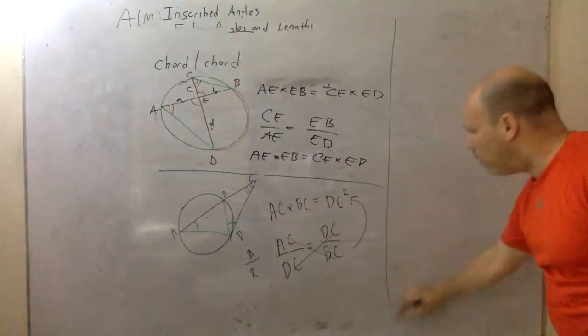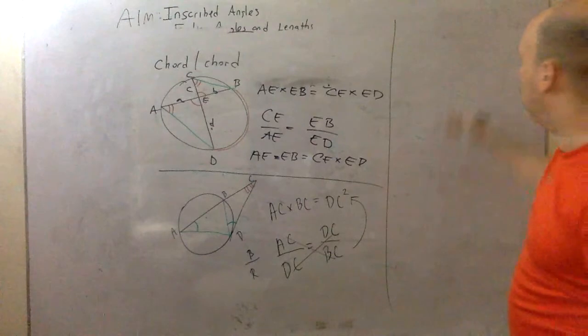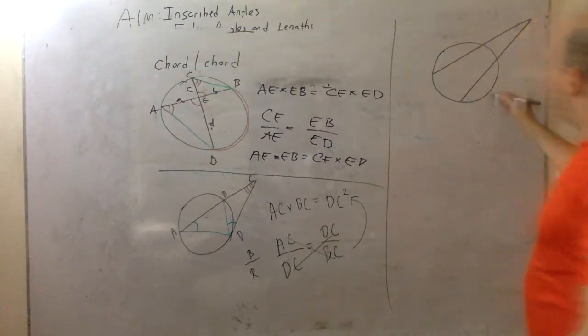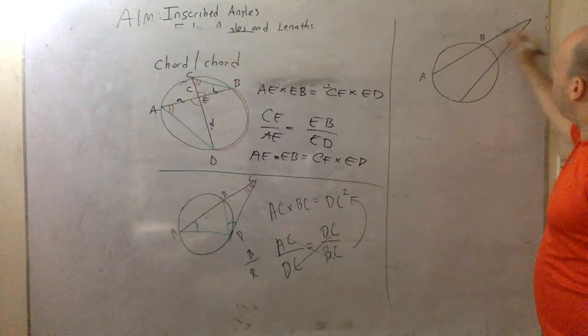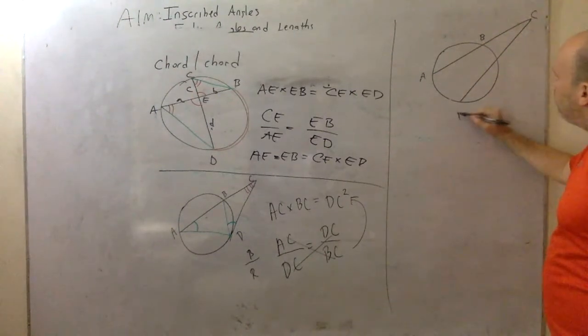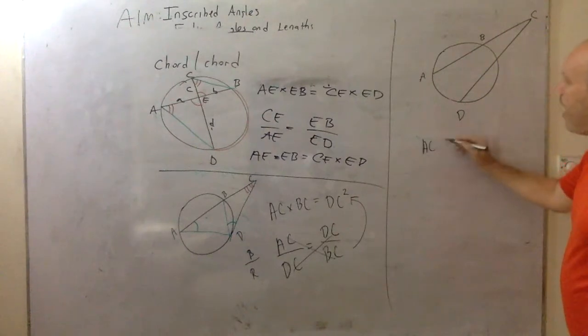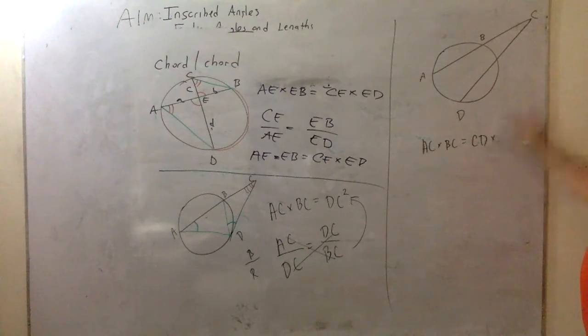Last one. Secant, secant. Let's see. A, B, C, D. Same idea. And the claim is, it kind of connects to this, that the entire secant times the exterior is equal to the entire secant. Let's make this E and D, the entire secant is equal to the exterior. Same idea.